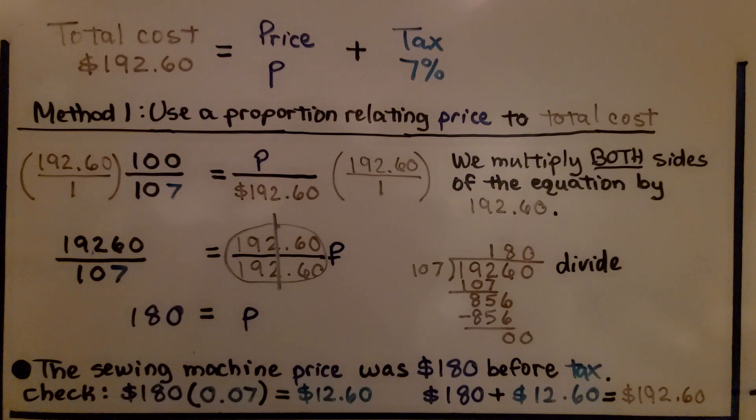The sewing machine price was $180 before tax. And we can check this, make sure it's reasonable. $180 multiplied by 0.07 for 7% is equal to $12 and 60 cents. And if we add $180 plus $12 and 60 cents, we get that total cost, $192 and 60 cents.